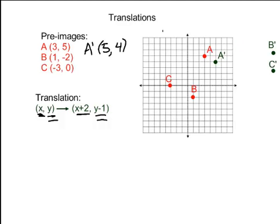Let's do the same thing for B. B prime is going to show up not with an x value of 1, but with an x value of 1 plus 2. And it's not going to have a y value of negative 2. It's going to have a y value of negative 2 minus 1. (3, -3), you end up down here.